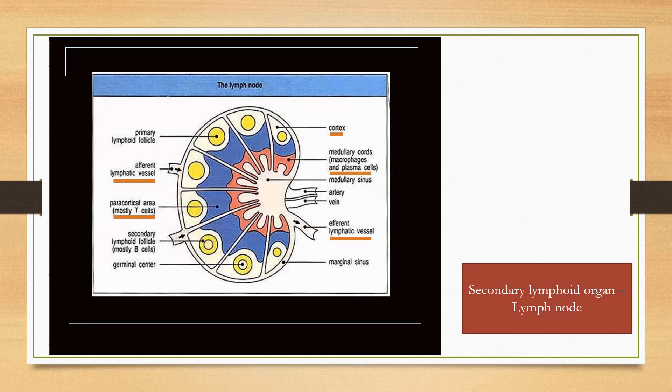The cortex is densely populated with B cells. The B cells are grouped together to form primary follicles. On immune response, germinal centers develop in primary follicles and form secondary follicles.